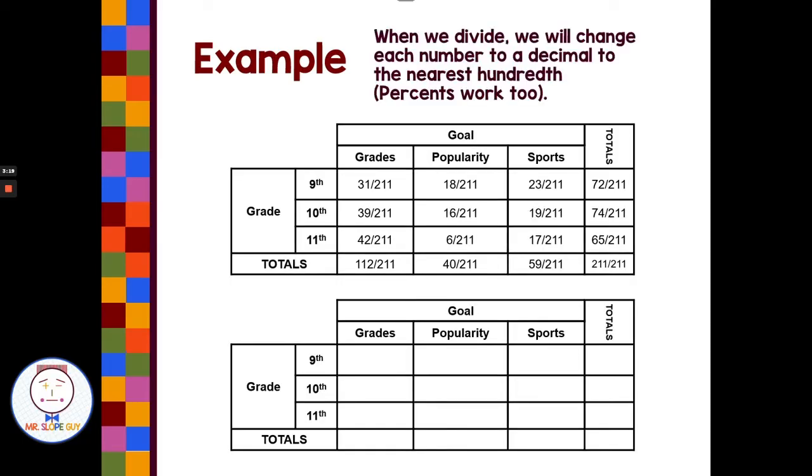So we're going to make a new table right below our old table. And it's going to start blank, but we have all our same categories of grades, popularity, sports, and our grades of 9, 10, 11.